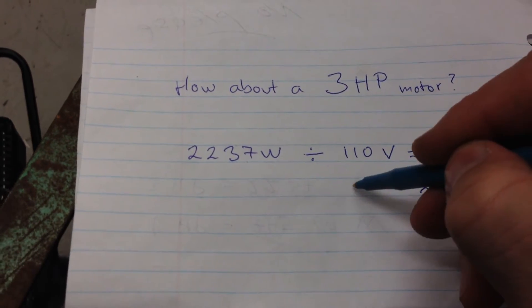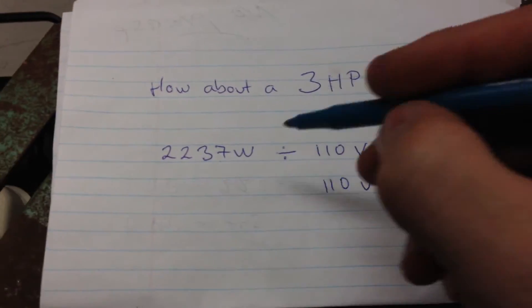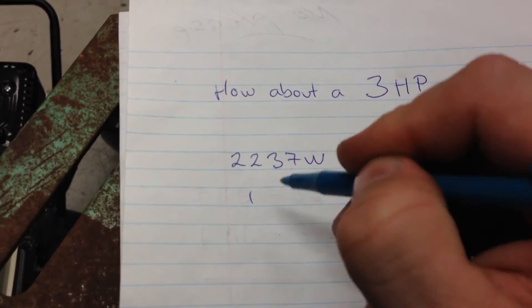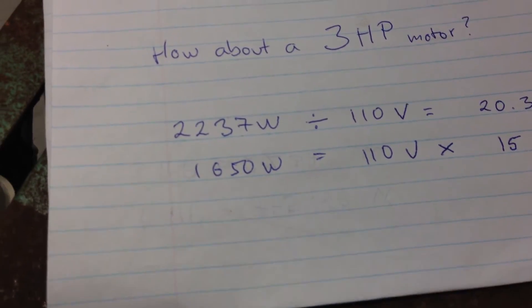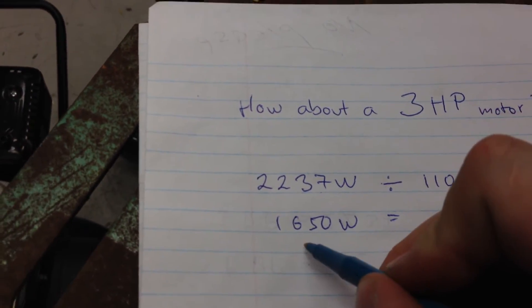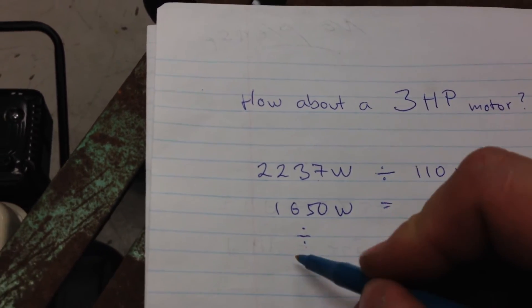So that's the wattage, 1650 watts needs to be divided by, now we're reading it this way, the 745 watts for every horsepower.